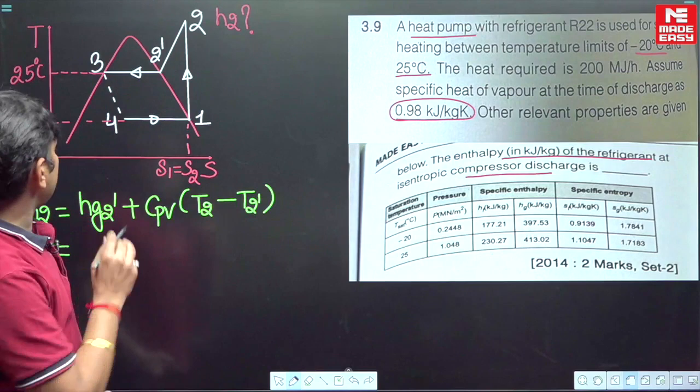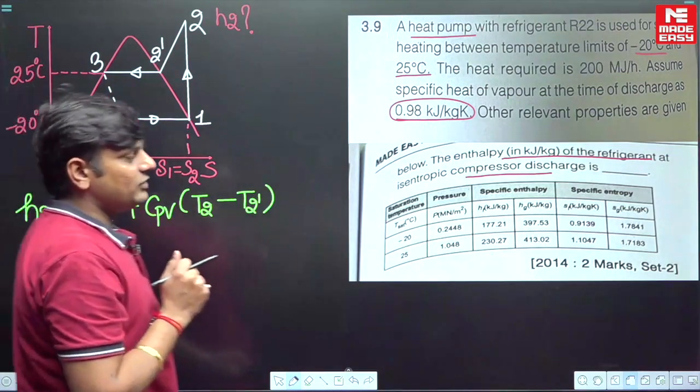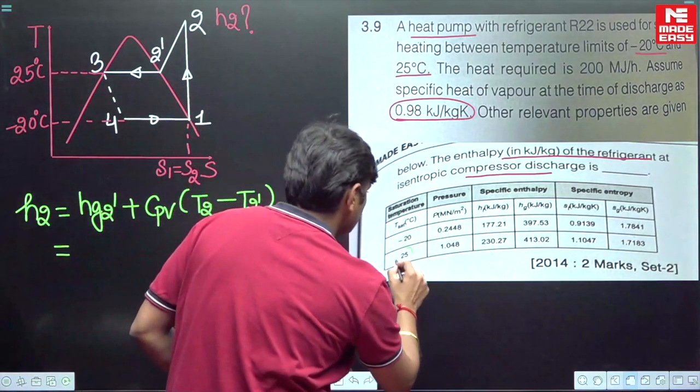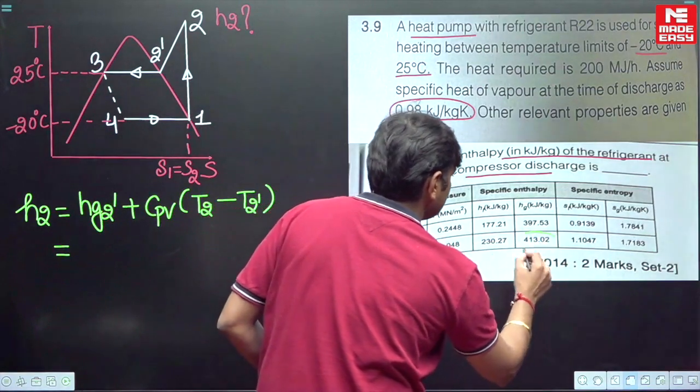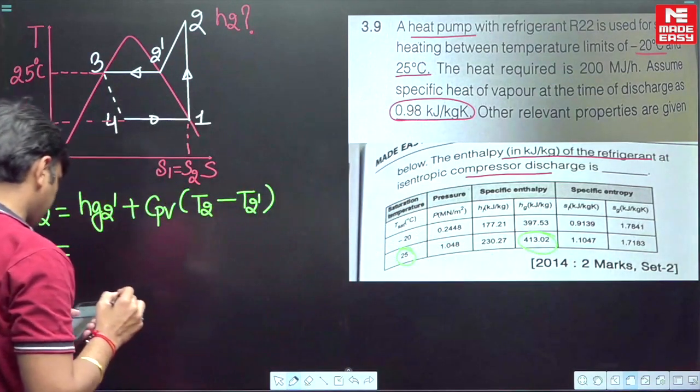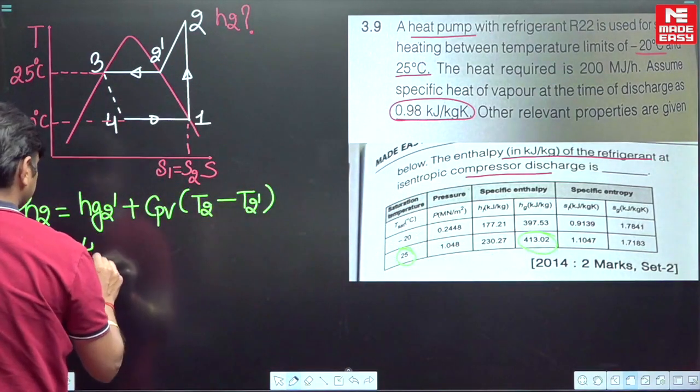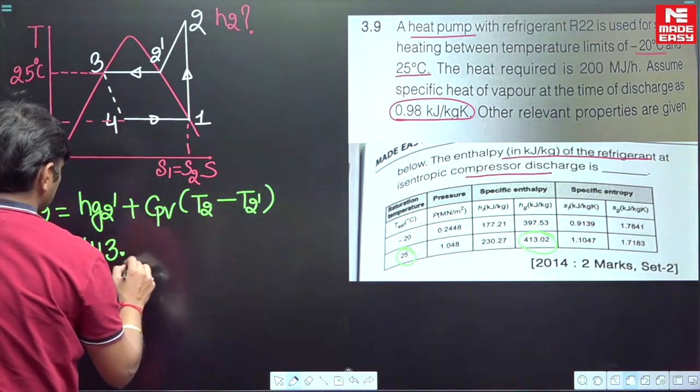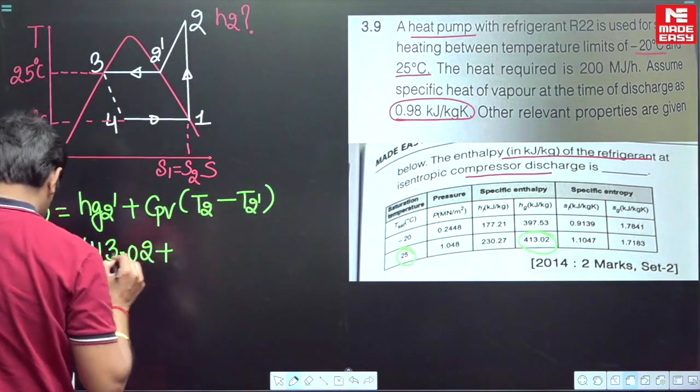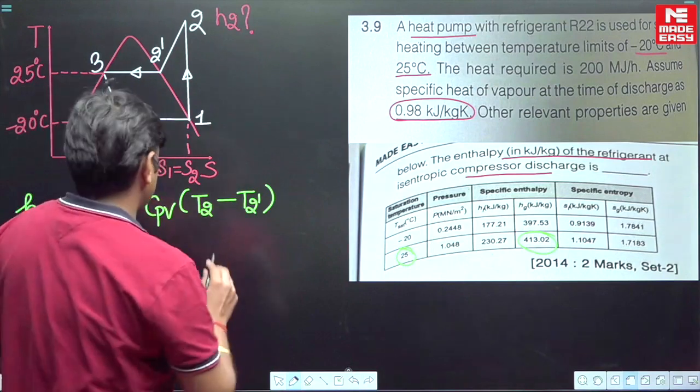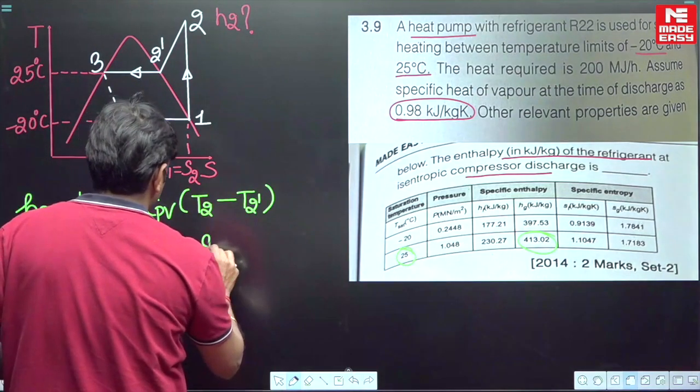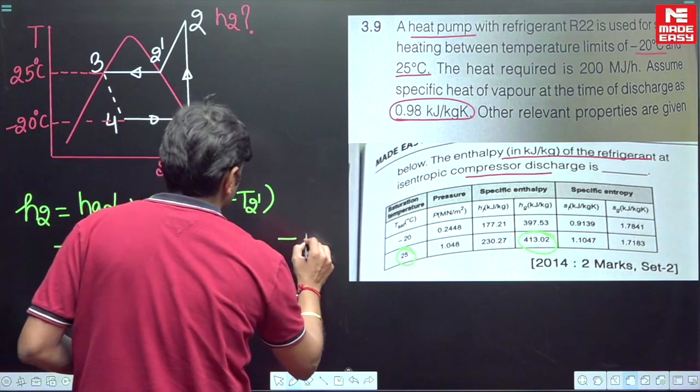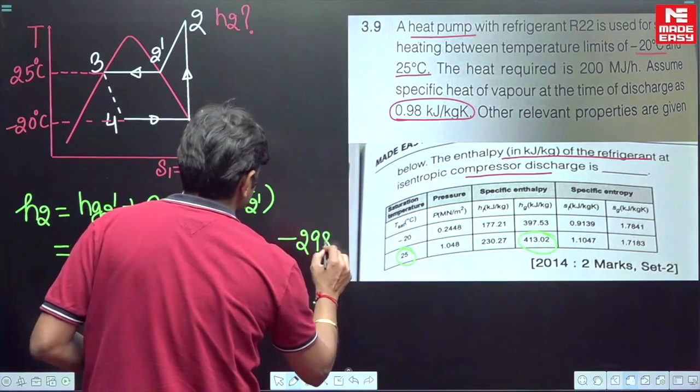HG2 dash plus CP of vapor T2 minus T2 dash. So what is the value of HG2 dash corresponding to 25 degrees Celsius? HG corresponding to 25 degrees Celsius the value is 413.02 plus CP of vapor that is given in the question 0.98. But T2 is unknown and T2 dash is 25 degrees Celsius.